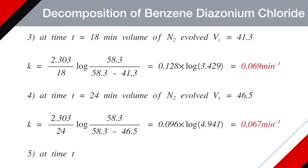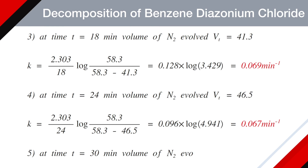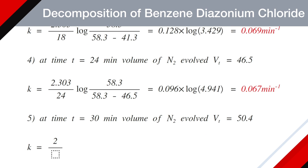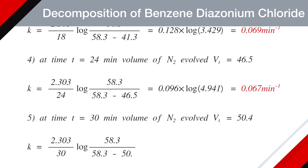Also, at time T equals 30 minutes, volume of nitrogen is 50.4 mL. So K becomes 2.303 divided by 30, log of 58.3 divided by (58.3 minus 50.4), which is 0.077 × log(7.380), and finally K = 0.067 min⁻¹.